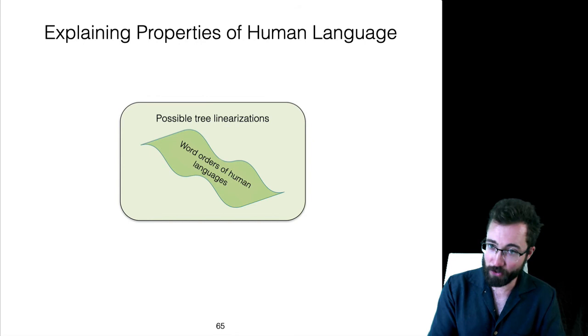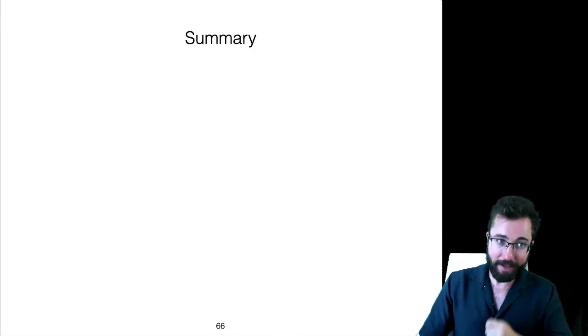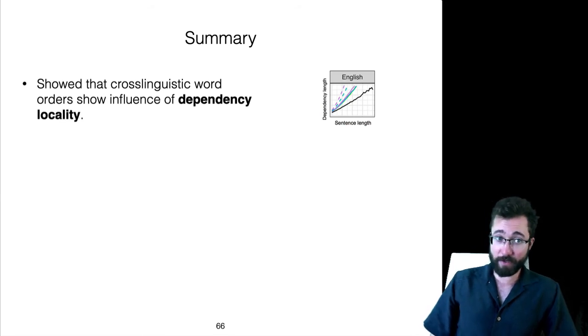The goal is to explain properties of human language in terms of the constraints that human language operates under. In particular, we're thinking about the word orders of human language among the possible ways you can linearize trees. I showed that cross-linguistic word orders, conceived of in this way, show an influence of dependency locality, which is attributable to working memory constraints in comprehension and maybe also production.